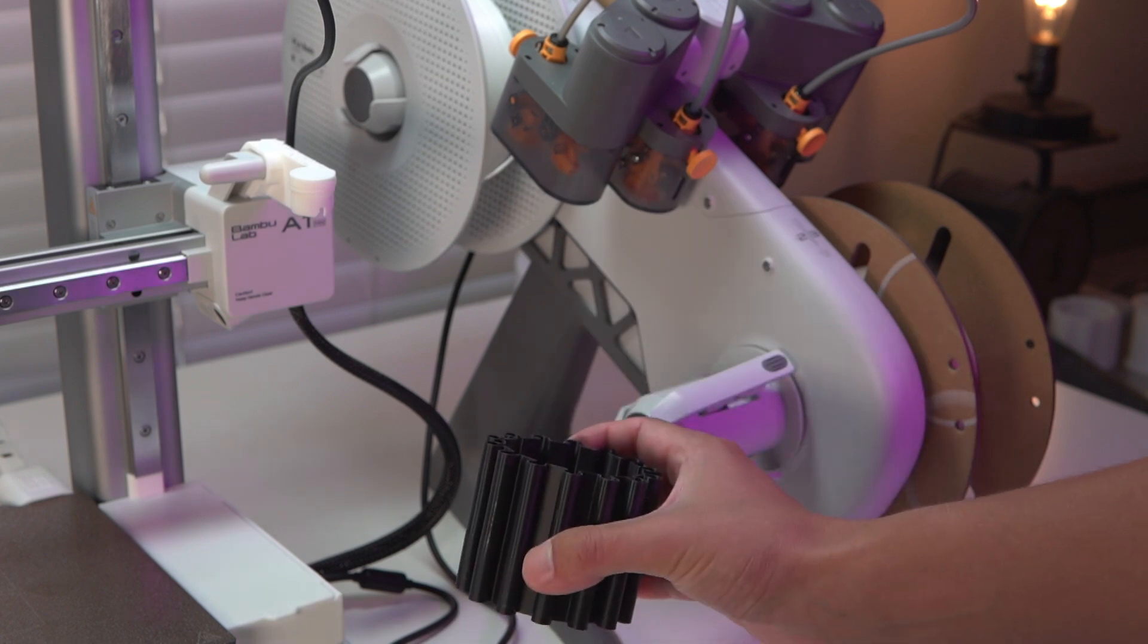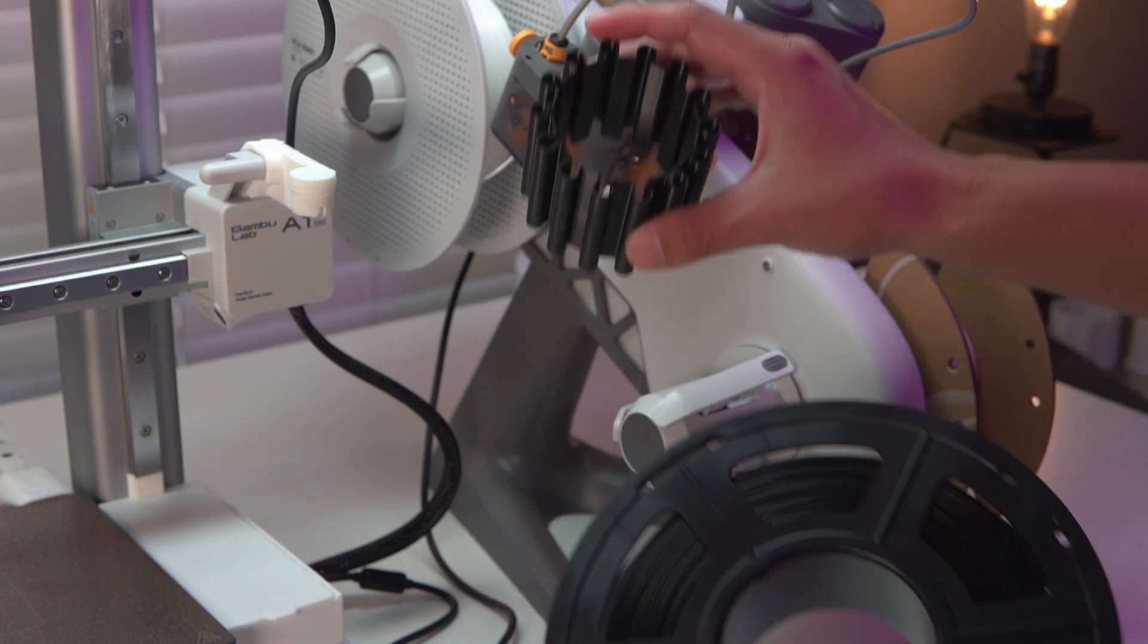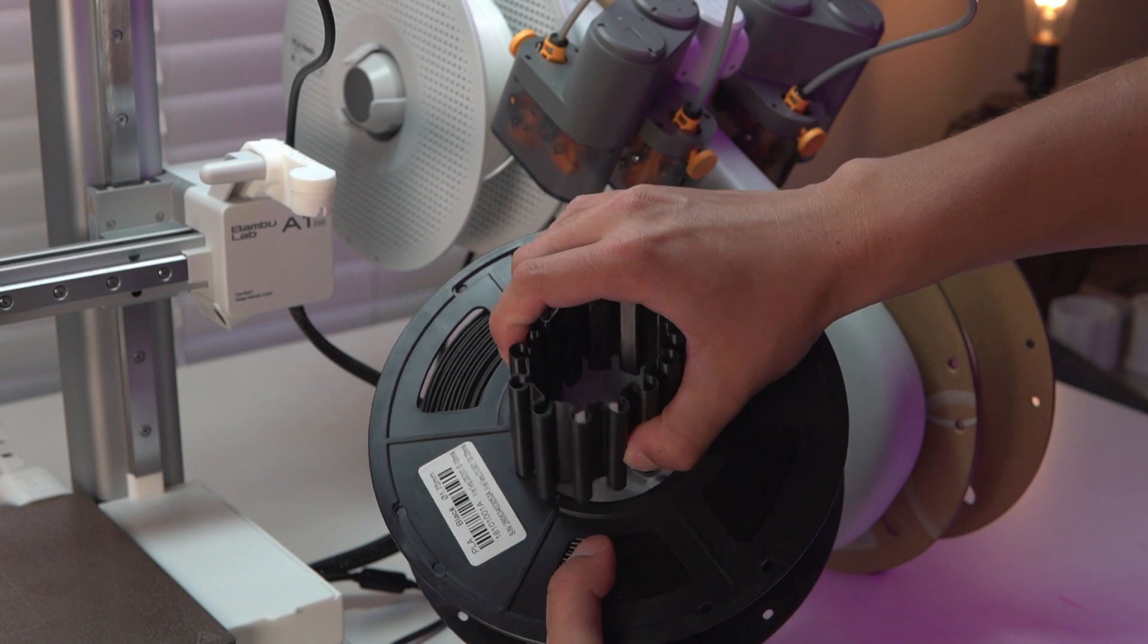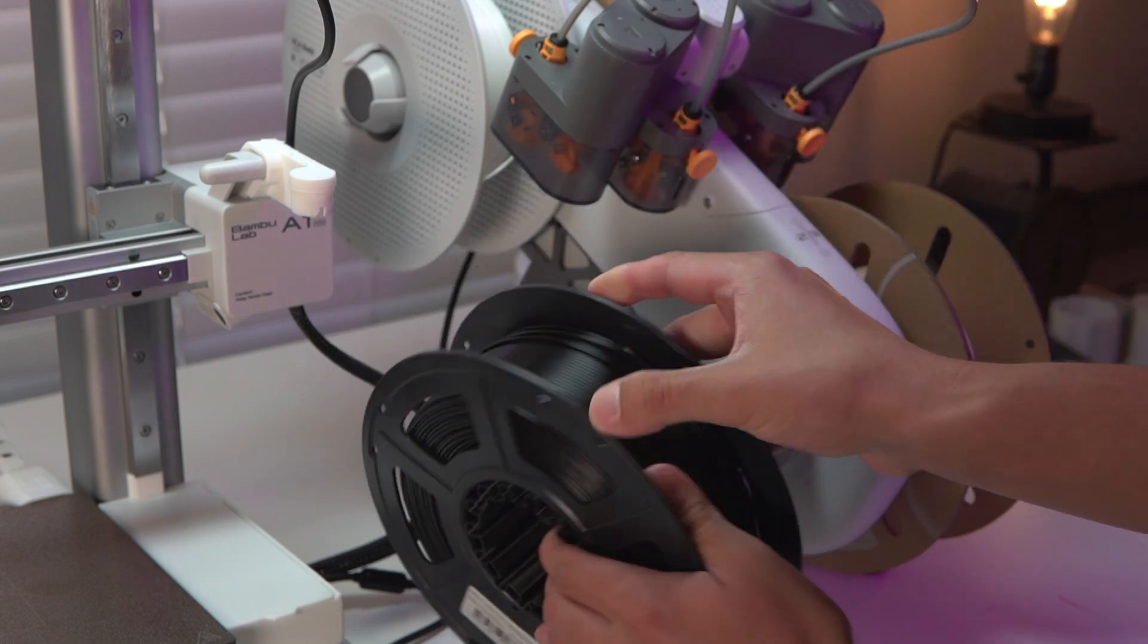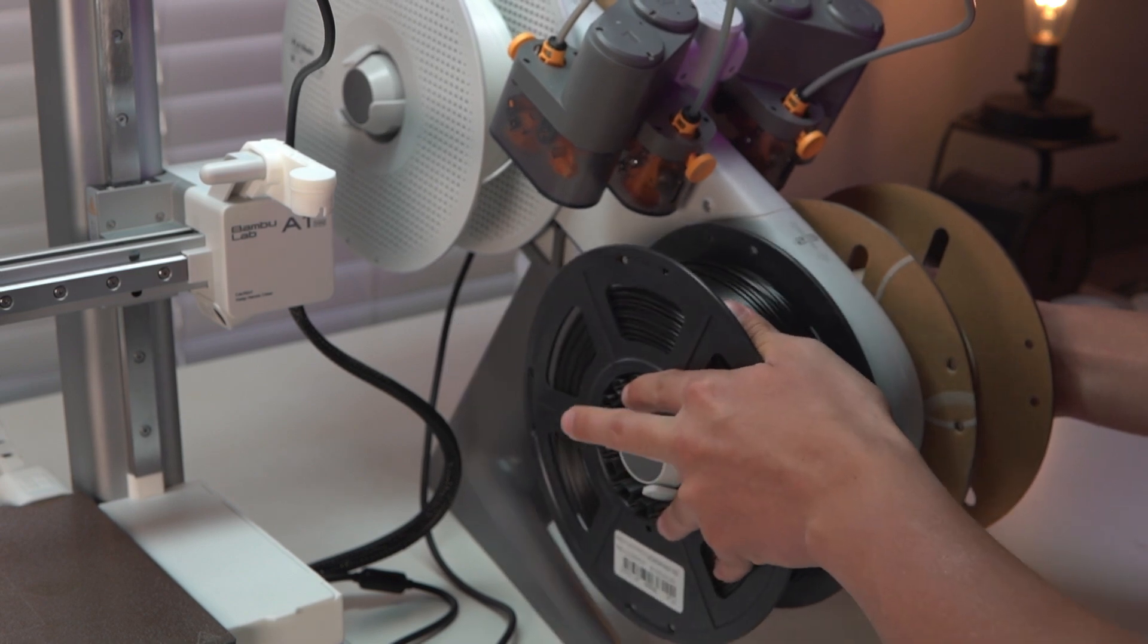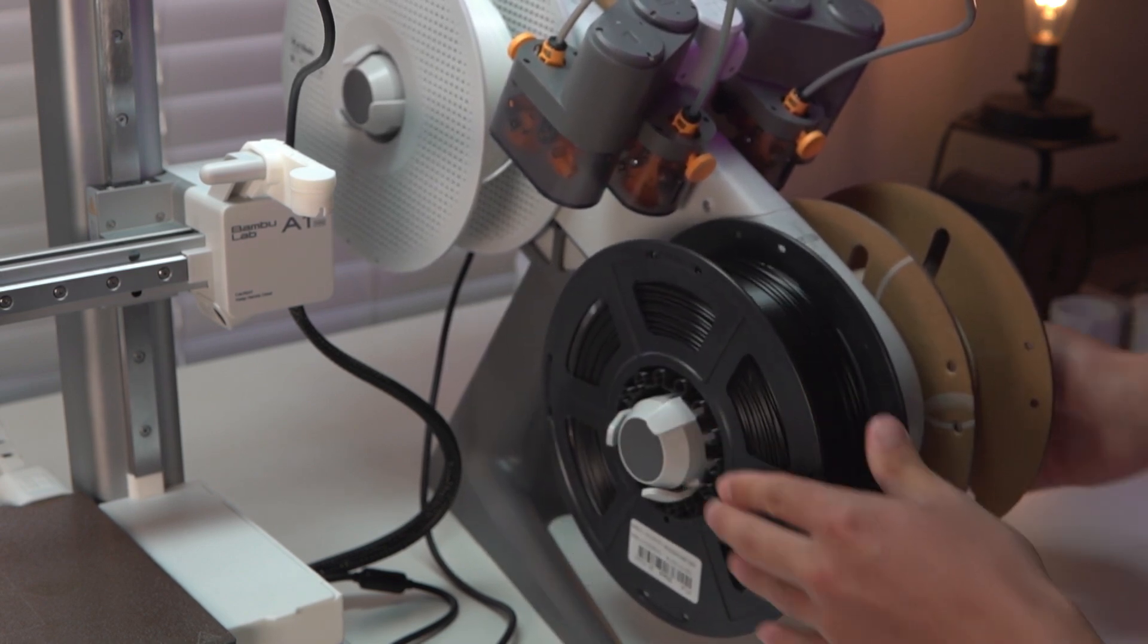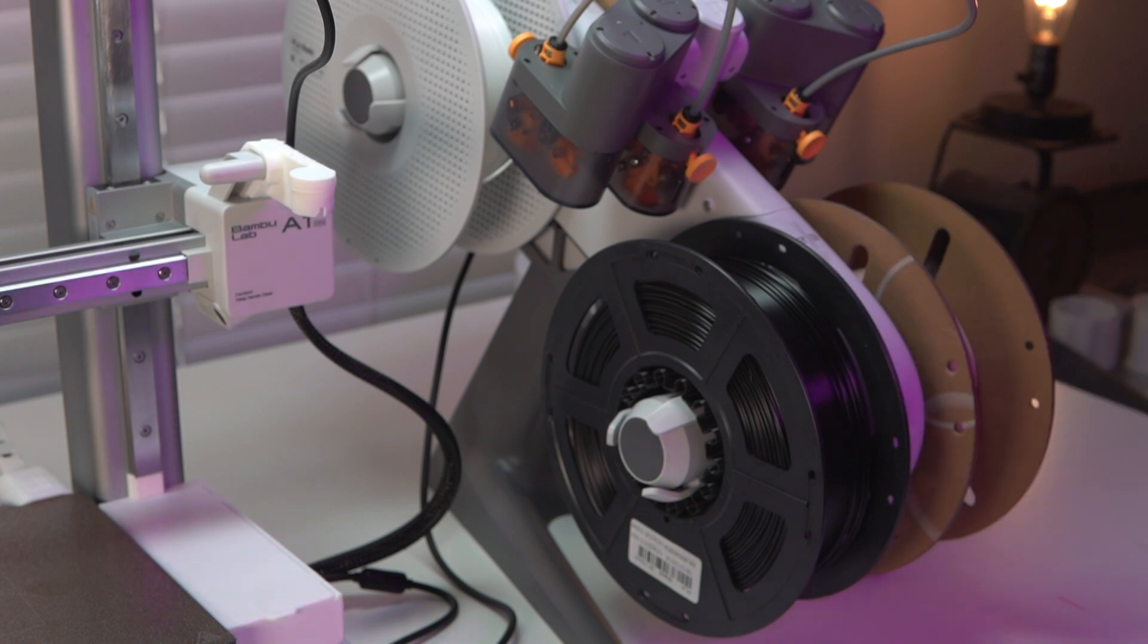Now this is a universal filament adapter, so all we are going to do is slide this into our filament roll just like that, and then we are going to pop it on our AMS system like normal. And now it fits very well and we can feed it and load different color filaments and different brand filaments as we please.